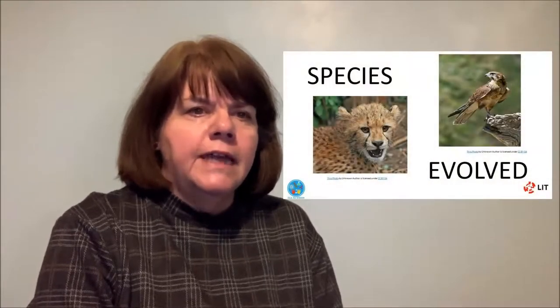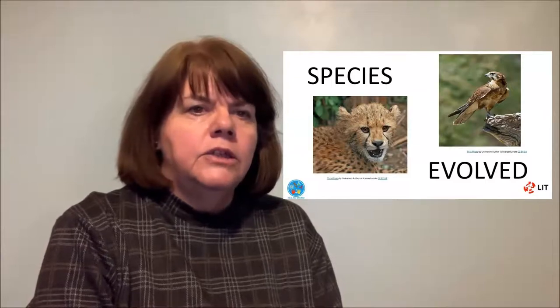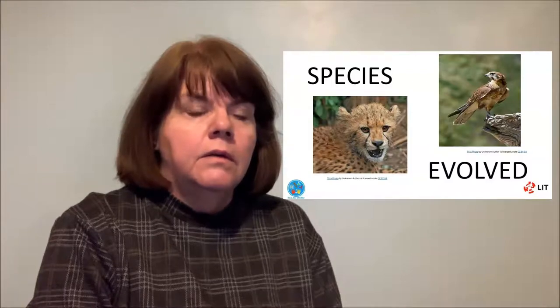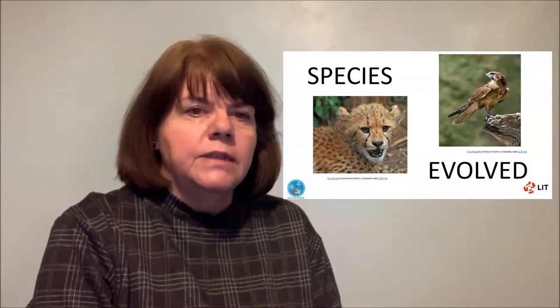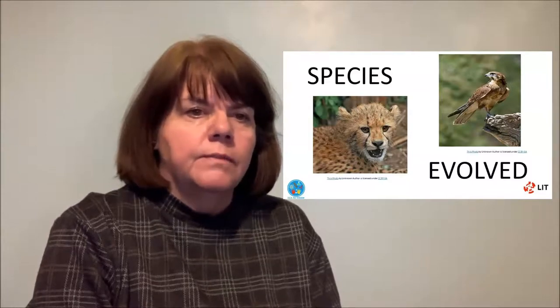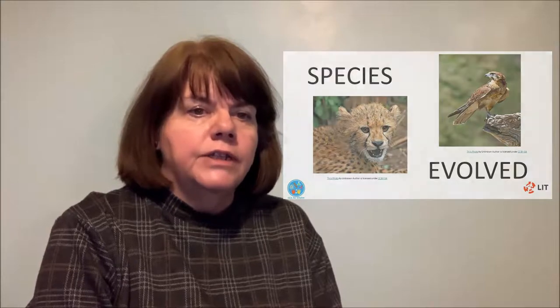Predators come in all shapes and sizes and they can hunt and catch their prey in different ways. Cheetahs use their teeth and claws, while falcons use their feet. These animals are different species or types of predators. Cheetahs might be better at hunting antelopes but falcons might be better at hunting small rodents. These are adaptations that these animals have evolved over millions of years to survive.